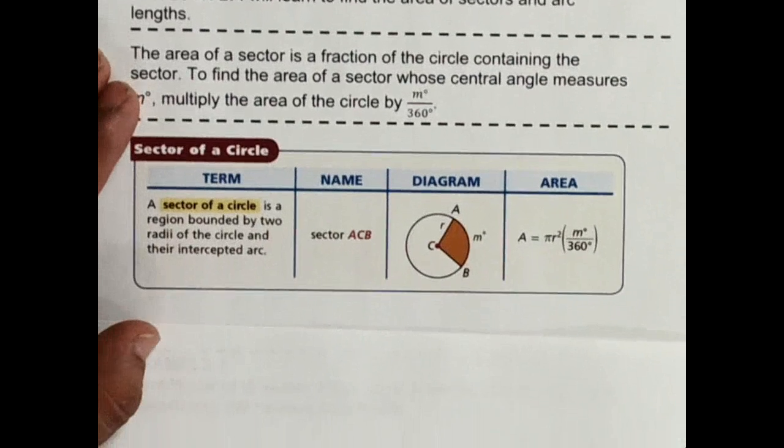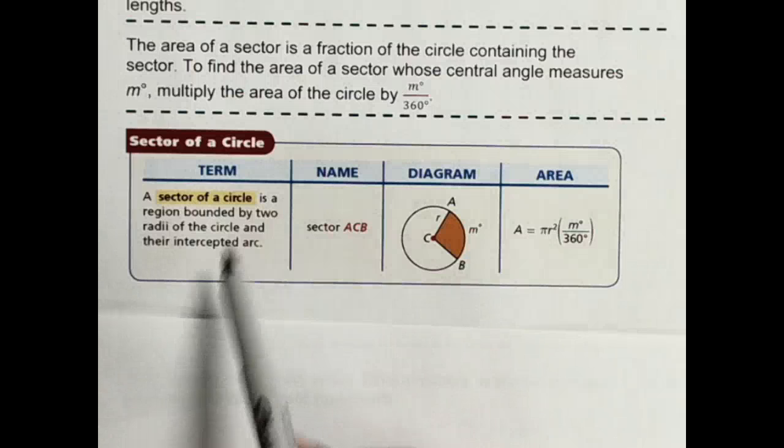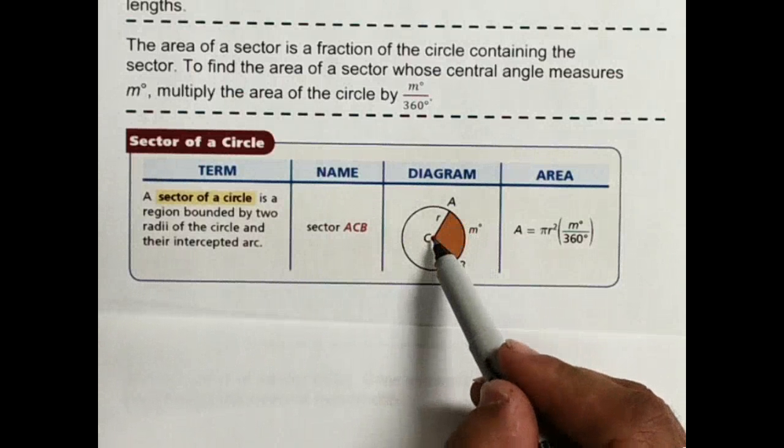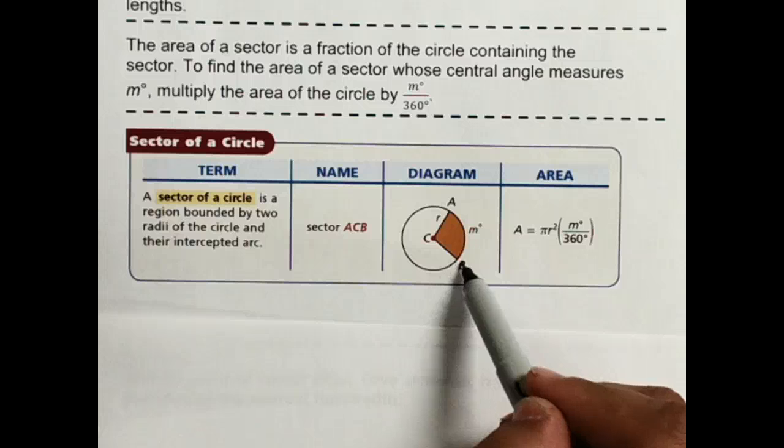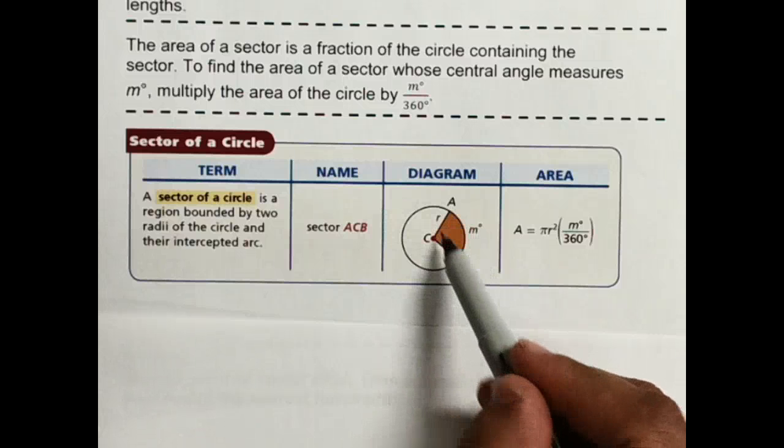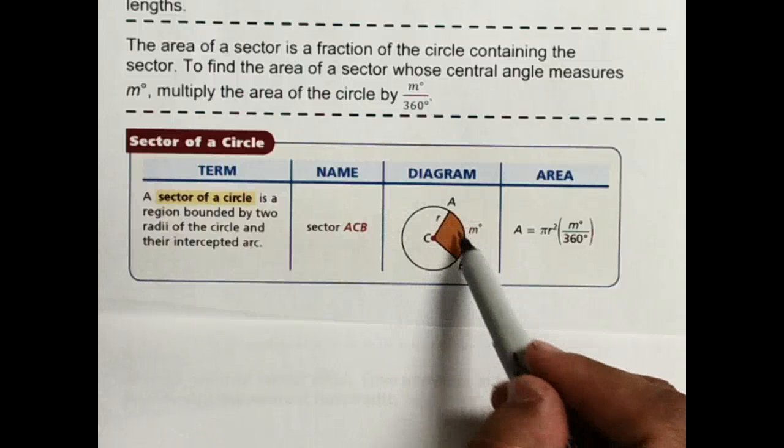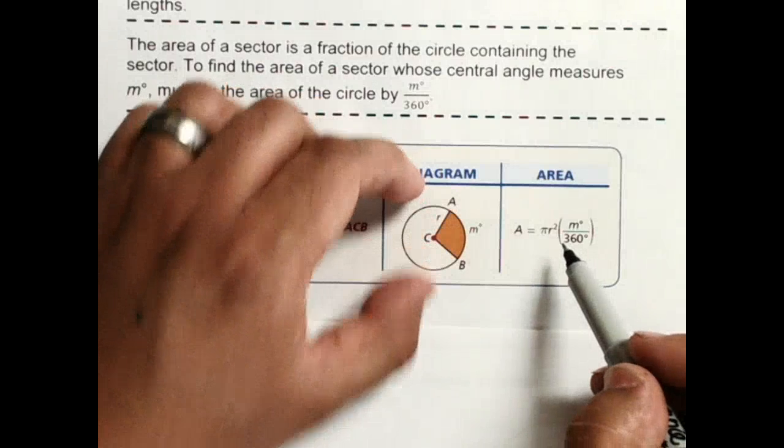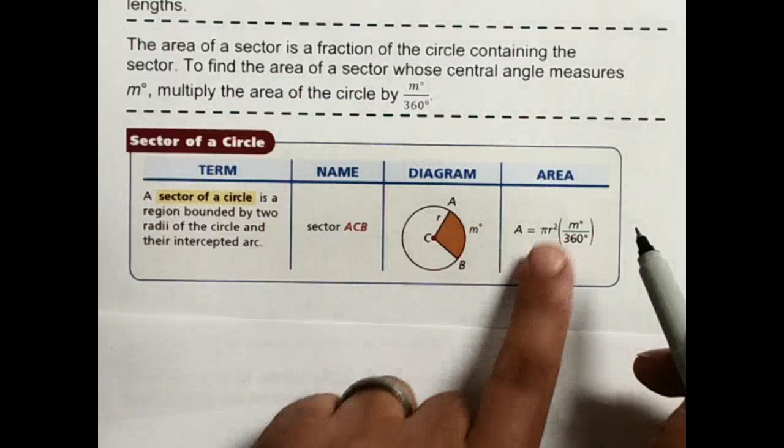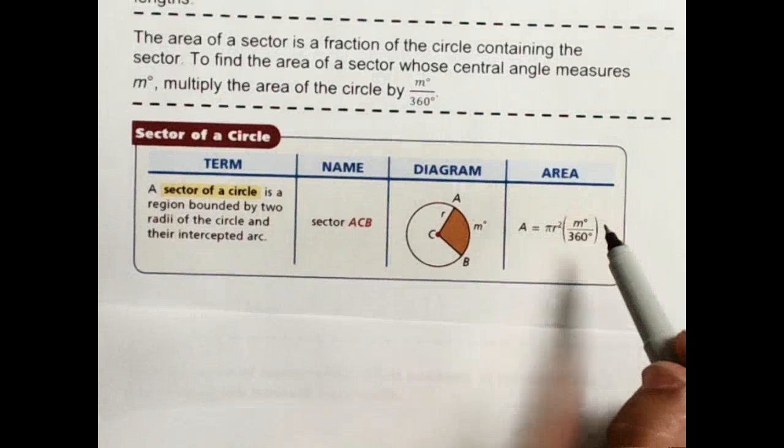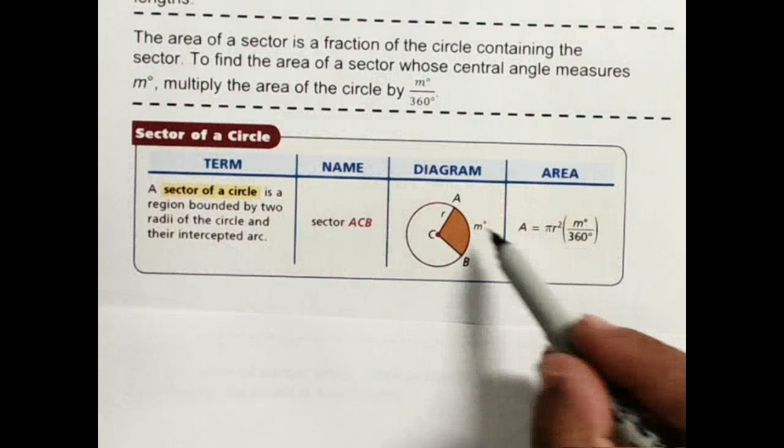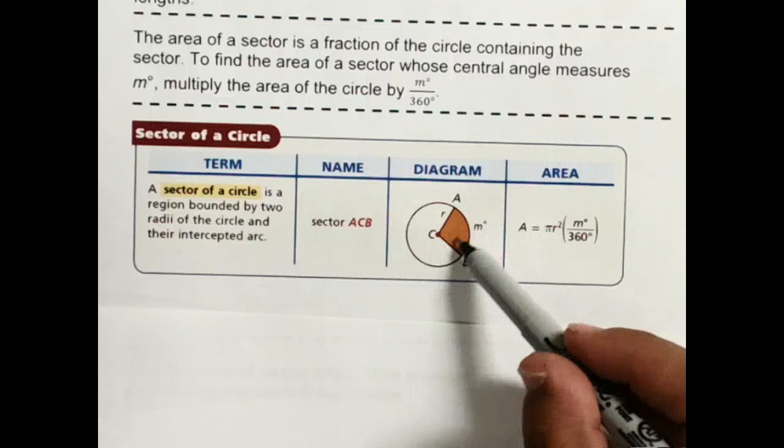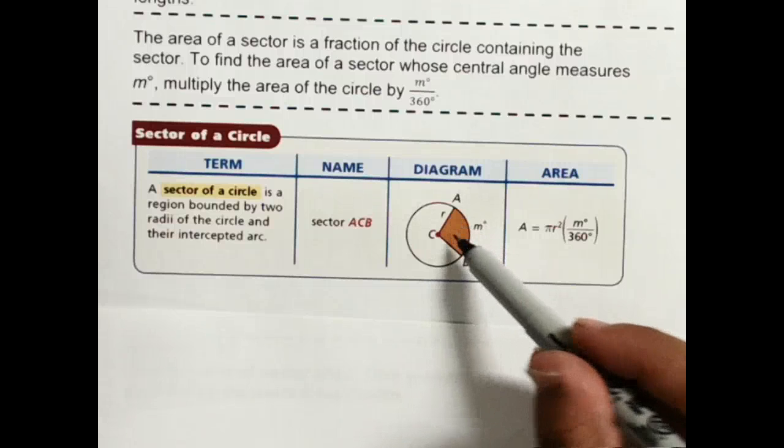So something a little more like this. The sector of a circle, I take from the center and I take two points on the edge and that creates this angle that's M degrees. So to find the area of that orange piece here, I would do pi R squared like normal. That gives me the whole circle. But this M over 360 gives me the fractional piece that I need.